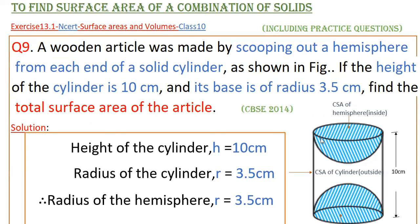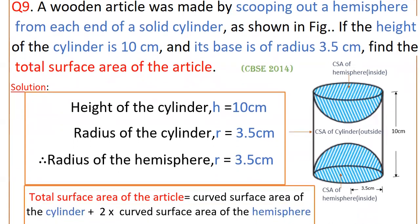This is the wooden article — it was made by scooping out a hemisphere from each end of the solid cylinder. The height of the cylinder is given as 10 centimeters and the radius of the cylinder is given as 3.5 centimeters. So the radius of each hemisphere is also 3.5 centimeters. We have to find the total surface area of the article.